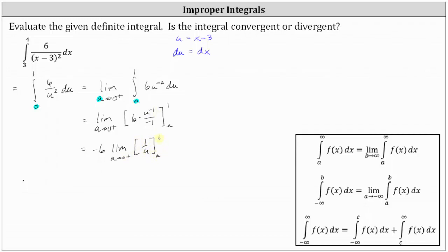Now we need to determine F(1) minus F(a). We have negative six times the limit as a approaches zero from the right: F(1) is one divided by one, minus F(a) is one divided by a. To determine the limit as a approaches zero from the right, one divided by one is equal to one, which is not affected by a.